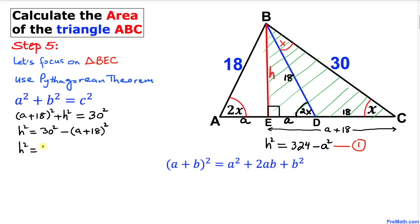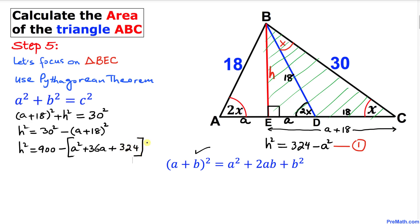Expanding (A + 18)² gives A² + 36A + 324. So we write 900 minus (A² + 36A + 324).